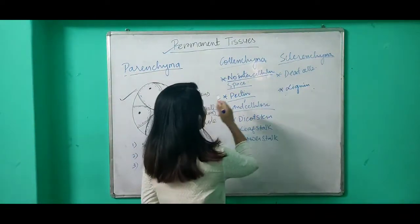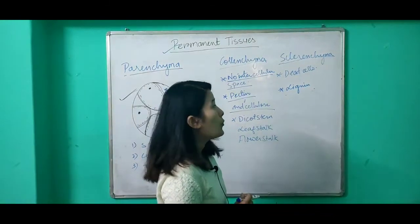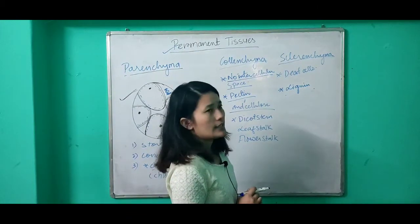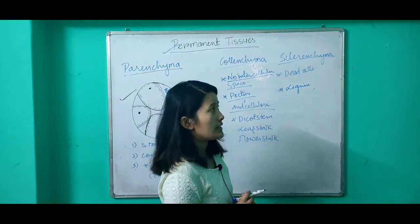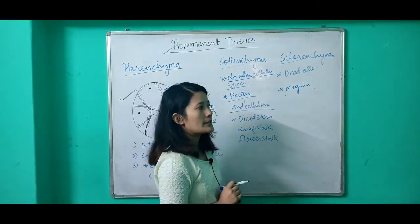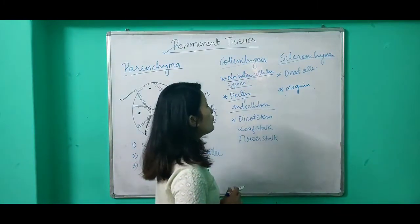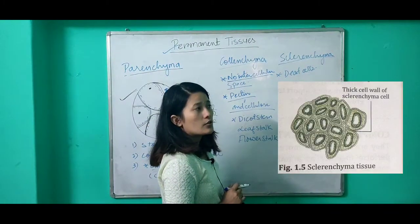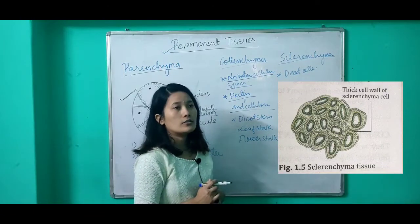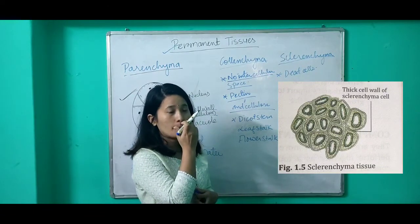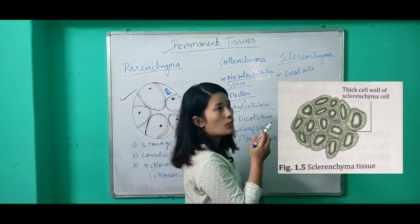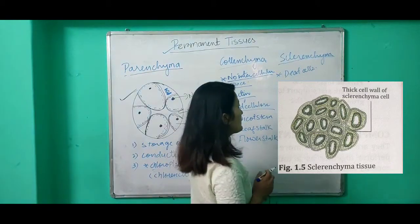Unlike parenchyma and colenchyma, when sclerenchyma cells mature, they become dead cells — they lose protoplasm and thus become dead cells. If you look at these cells, they are also more or less oval in shape, they have no intercellular space between them, and are compactly packed.